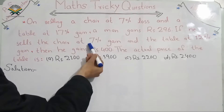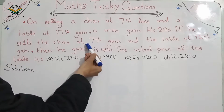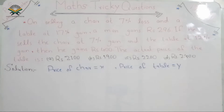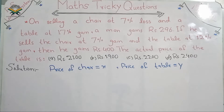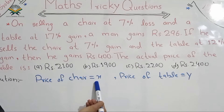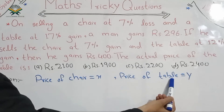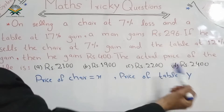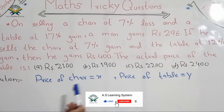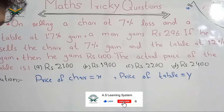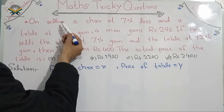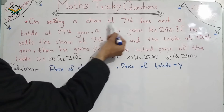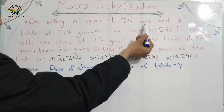There are two parts of this statement. According to the condition of the question, let the chair price be x and the table price be y. The first case involves selling a chair at 7% loss.